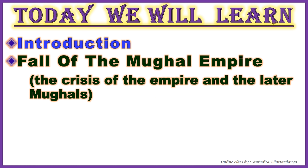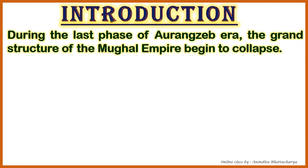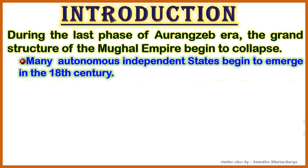Let's start with the introduction — the reshaping of Mughal territories. During the last phase of Aurangzeb's era, the grand structure of the Mughal Empire began to collapse. As a result, many autonomous independent states began to emerge in the 18th century.